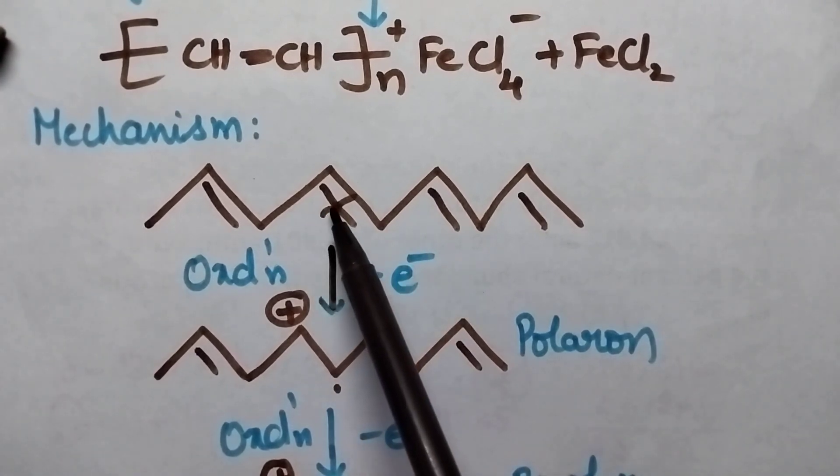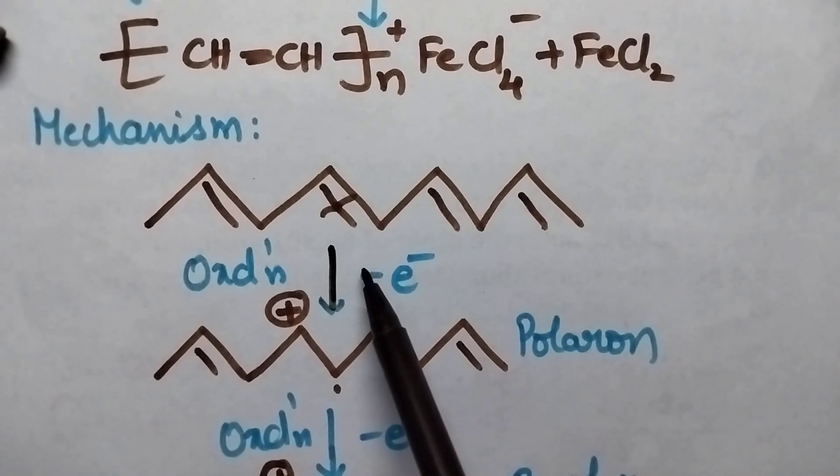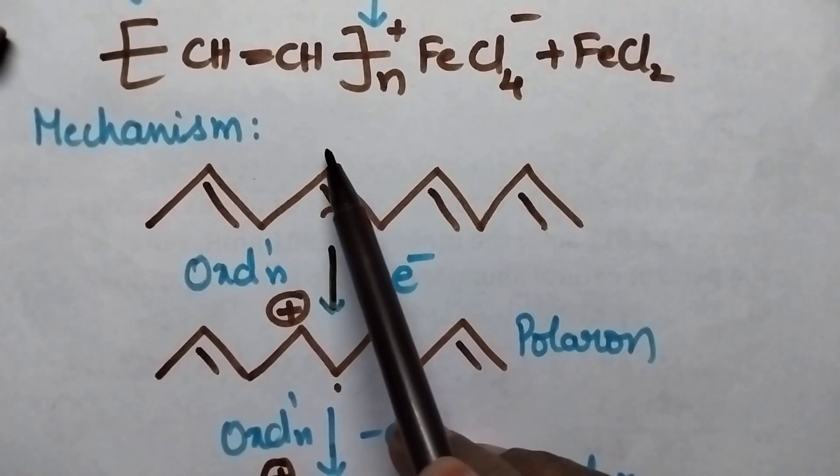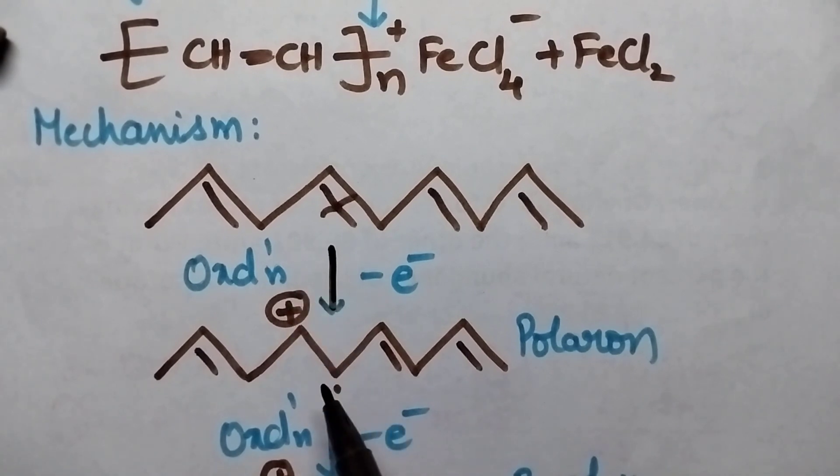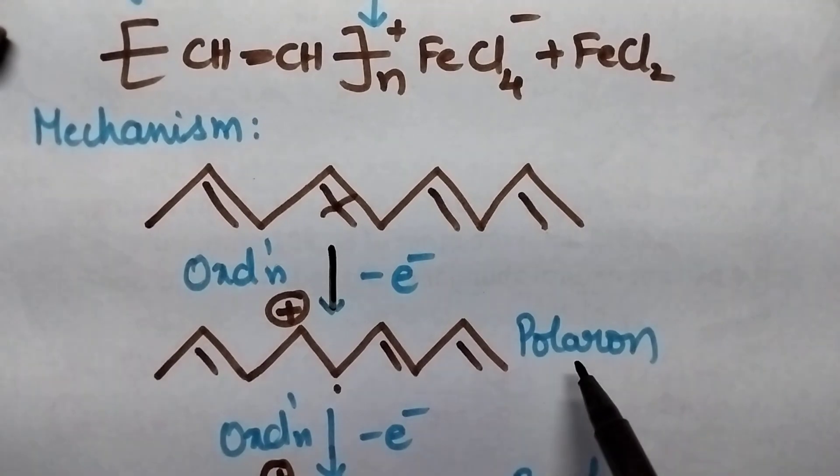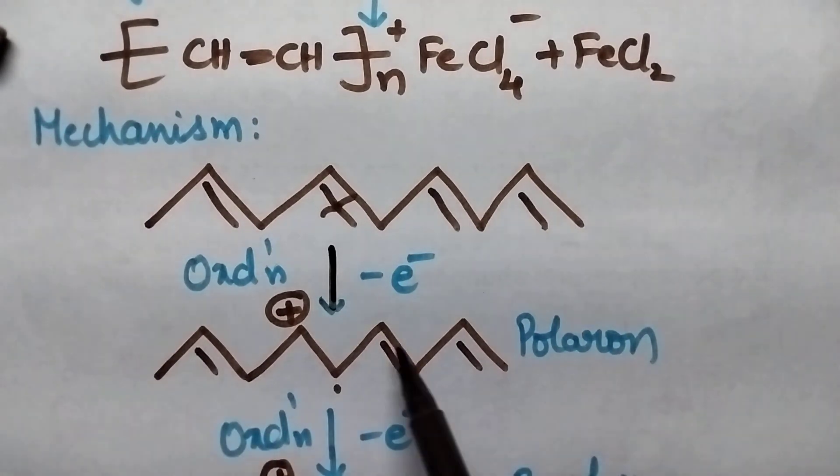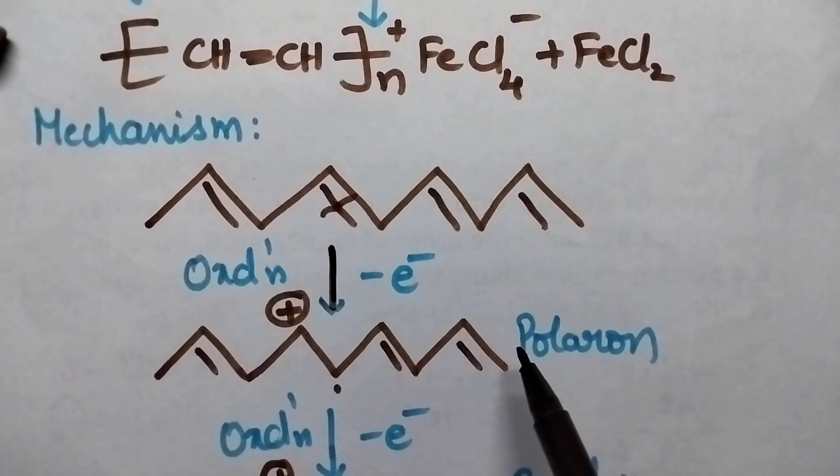This double bond undergoes cleavage, and the electron will be removed from this position, hence it results in the formation of an ion radical. Simply it can be called as polaron, and there will be no change with respect to the other double bonds.